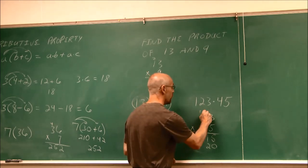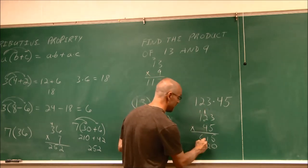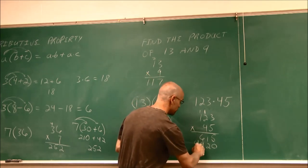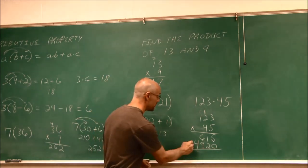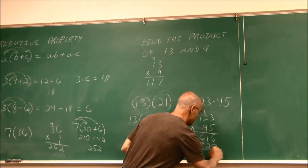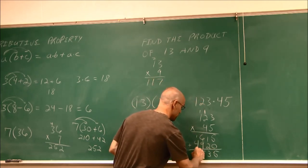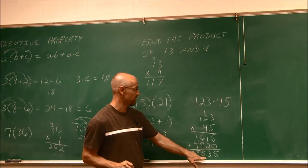4 times 2 is 8, plus the 1 is 9. Nothing to carry. 4 times 1 is 4. This is another partial product. If we sum our partial products together, we're going to get the product of the multiplication. So we get a total of 5,535.